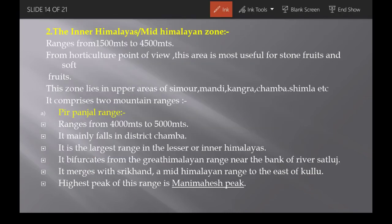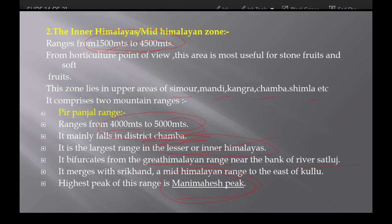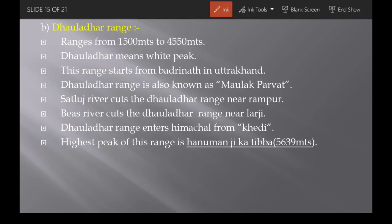The Inner / Mid Himalayan Zone ranges from 1,500 to 4,500 meters and is best from a horticulture point of view. The mid Himalayas are divided into Pir Panjal and Dhauladhar. Pir Panjal ranges from 4,000 to 5,000 meters and is mainly found in Chamba. It is the largest range in the lesser/inner Himalayas. It bifurcates from the greater Himalayas near the Sutlej River and merges at Shrikhand in Kullu. The highest peak of Pir Panjal is Mani Mahesh. Dhauladhar ranges from 1,500 to 4,550 meters; 'Dhauladhar' means 'white peak.' This range starts from Badrinath in Uttarakhand.